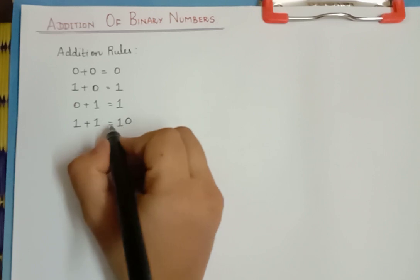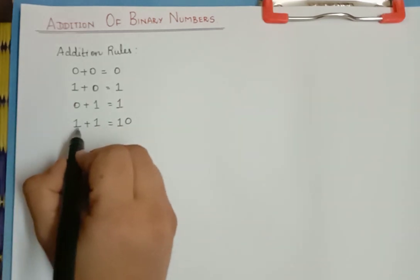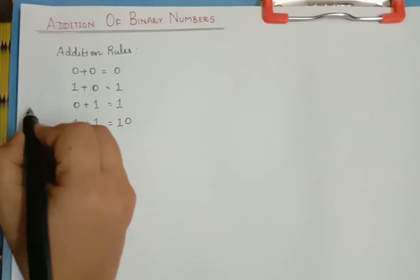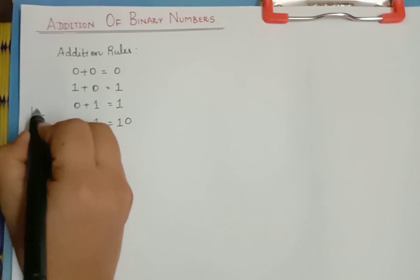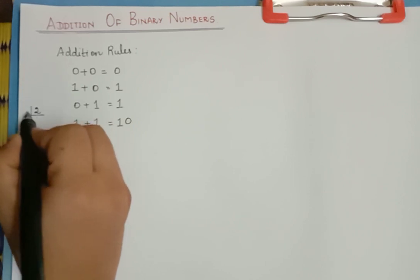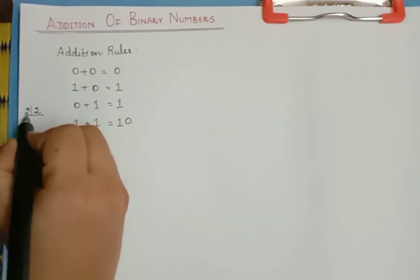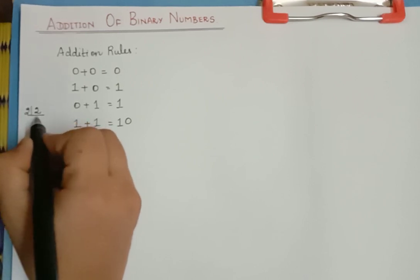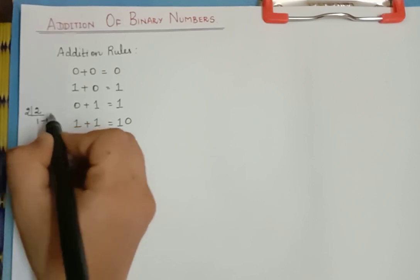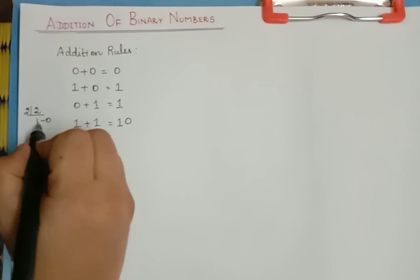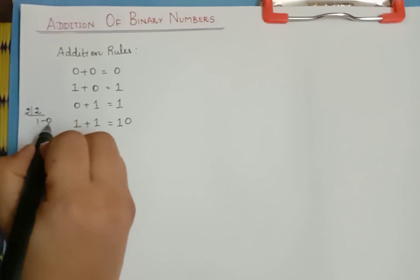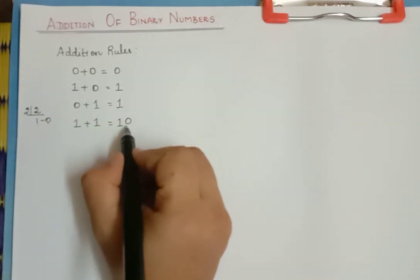I will tell you the reason behind it. The reason is, in decimal addition, 1 plus 1 is 2. Now if you take 2 and keep dividing by 2, you get 2 ones are 2 and the remainder is 0. Therefore, the binary representation for 2 is 10. So that is what we have here.